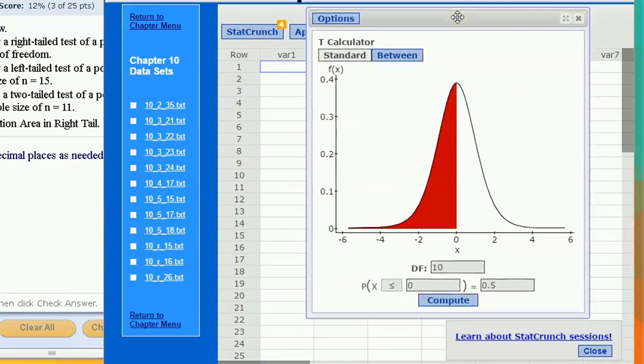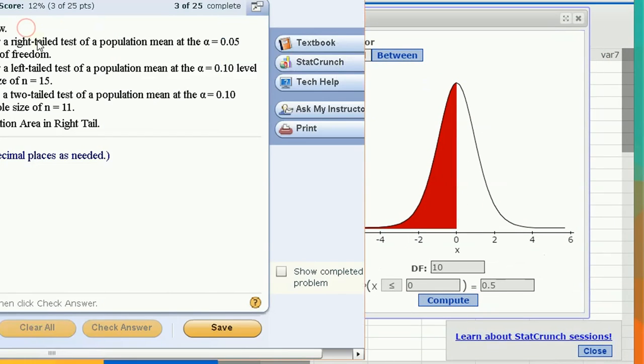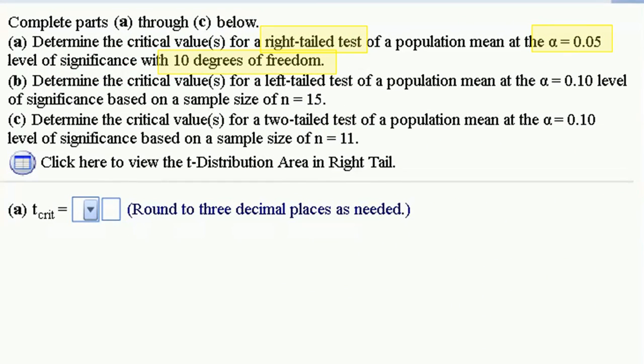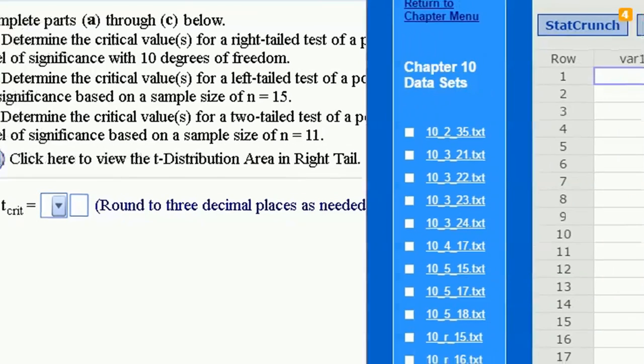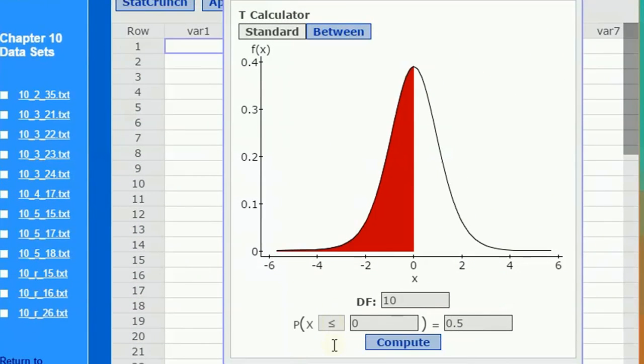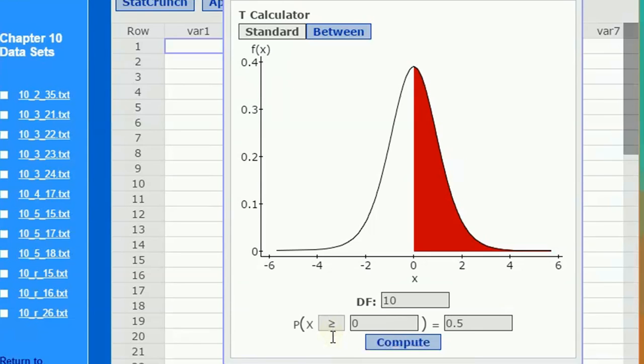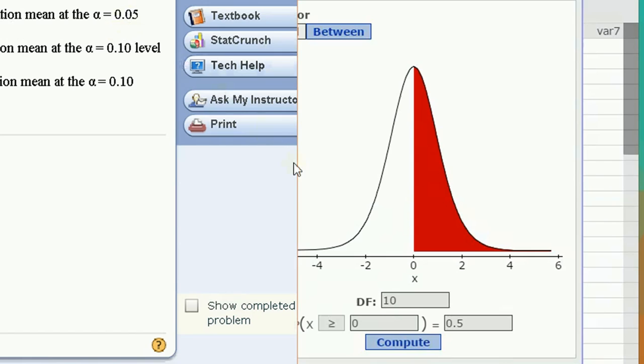For these, we have to set the degrees of freedom and I have to set the tail to be the right way. The first one, I'm looking at the critical value for a right-tailed test for a population mean at alpha 0.05 with 10 degrees of freedom. Degrees of freedom is set to 10 coincidentally by default, but I want to do a right-tailed test. I click this to be greater than or equal to, and now I'm going to set my alpha level. What was it? 0.05.